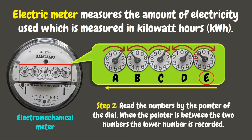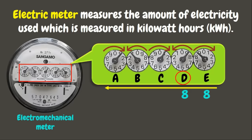We can see that the pointer points between 8 and 9. Since 8 is the smaller number, that will be our dial E reading. Next, in dial D, we can see that the pointer points again between 8 and 9, so the dial reading would be 8 since it is the smaller one. Next, in dial C, we can see that the pointer points exactly at 1.